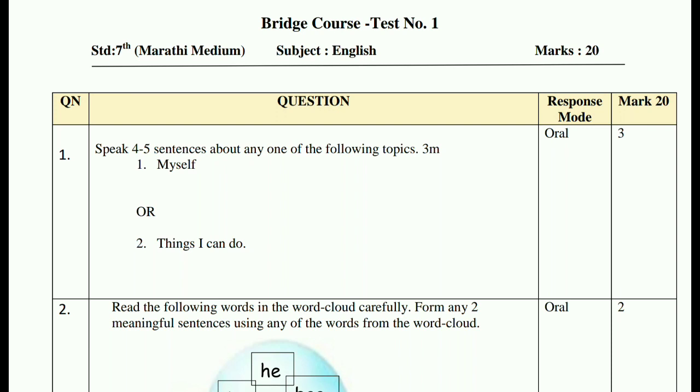This is for three marks. The question asks you to speak about either 'Myself' or 'Things I Can Do.' You need to tell four to five sentences about what you can do, and the response mode is oral—you have to give the answer orally.